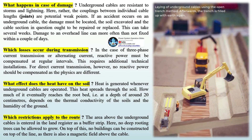What happens in case of damage? Underground cables are resistant to storms and lightning; rather, the couplings between individual cable lengths — joints — are potential weak points. If an accident occurs on an underground cable, the damage must be located, the soil excavated, and the cable section in question repaired or replaced. This can take several weeks. Damage to an overhead line can more often than not be fixed within a couple of days.